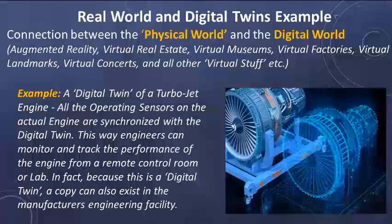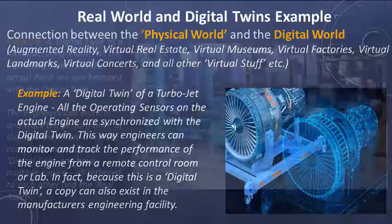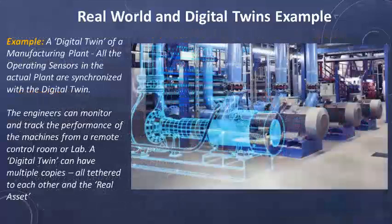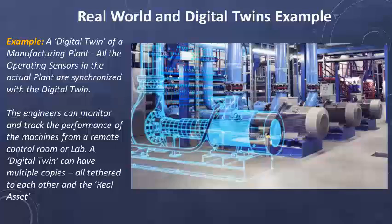This is an example of a digital twin in a manufacturing plant. All operating sensors in the actual plant are synchronized with the digital twin. Engineers can monitor and track the performance of the machines from a remote control room or lab. A digital twin can have multiple copies all tethered to each other and also to the real asset.